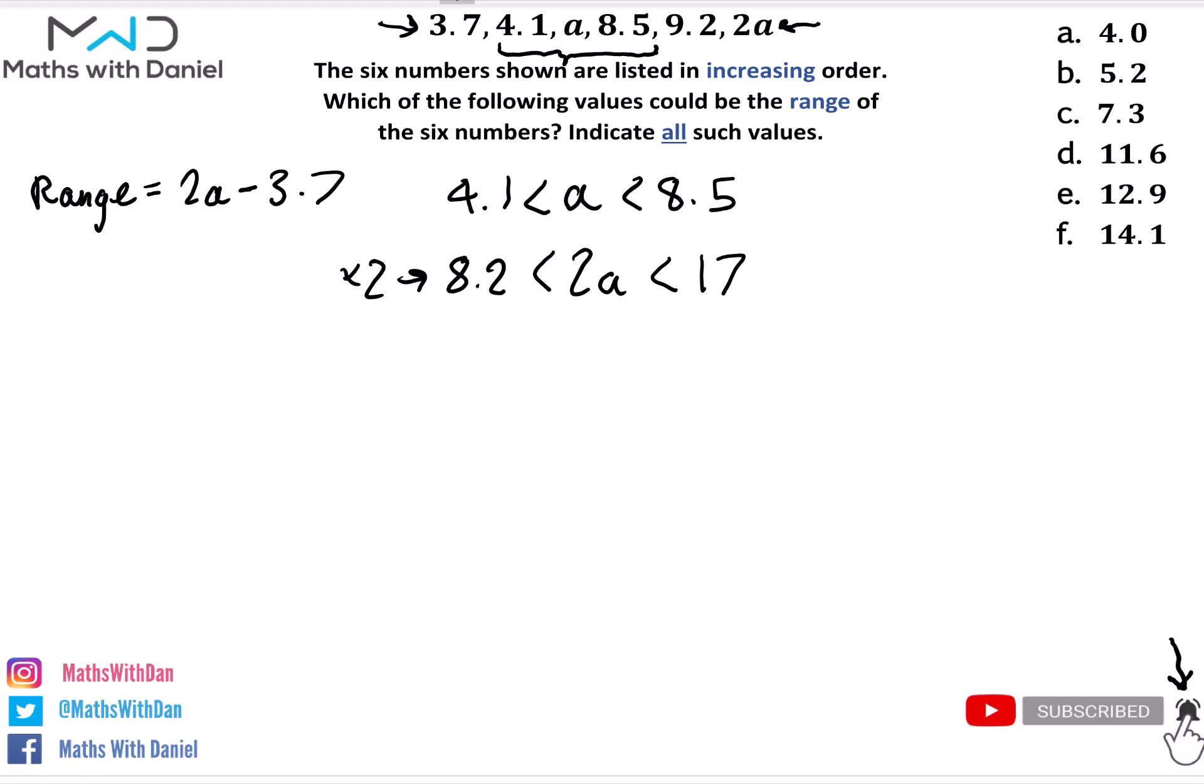Now here's the tricky bit that some people would miss. You can also find another inequality from the set of numbers given. If you look at the last two numbers here, 9.2 and 2a, well 2a is the biggest number of all, and 9.2 is the second biggest. So from that you can say to yourself, well 9.2 is smaller than 2a. So whatever 2a is, we know that it has to be bigger than 9.2 for sure. What that does is this changes this inequality a little bit. It tightens the restriction. So instead of 2a being between 8.2 and 17, it is going to be in between 9.2 and 17.